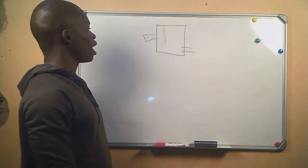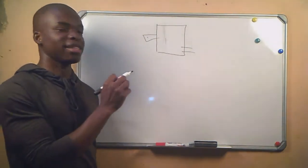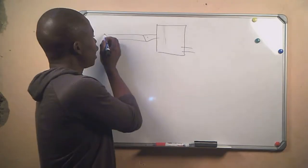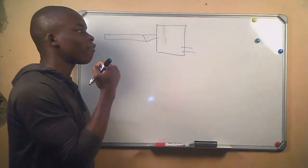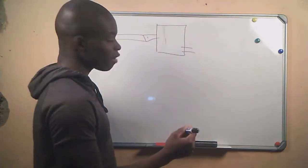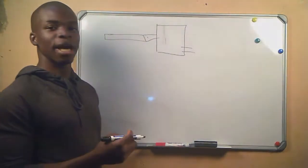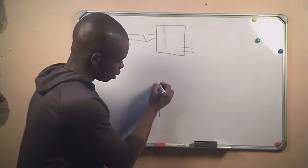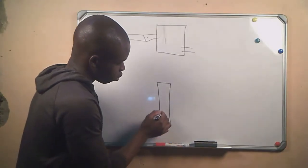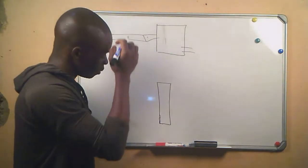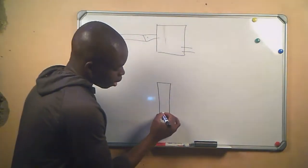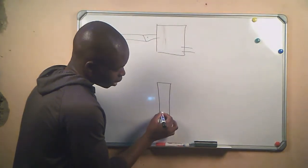That's where we introduce a device called a turbine. A turbine consists of a shaft, and that shaft will be coupled to the shaft of the generator. The shaft of the turbine will consist of blades that are at an angle.